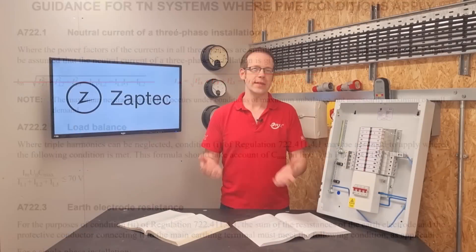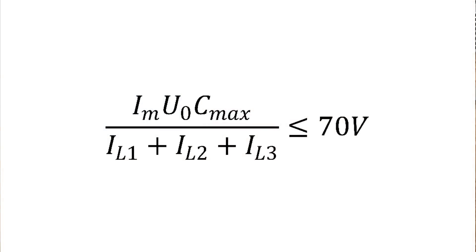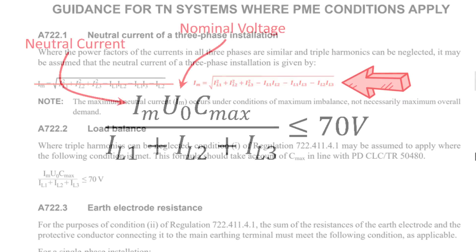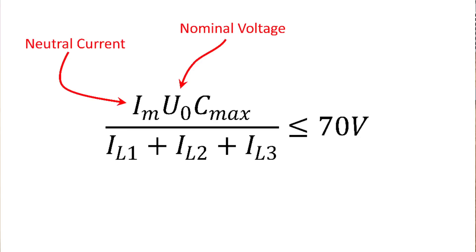IM times UO times Cmax over IL1 plus IL2 plus IL3 is less than or equal to 70 volts. The formula is actually pretty simple—it's just Ohm's law and the power formula all jumbled up together. On the top line, IM is the current in the neutral, which can be found by applying the rather scary formula in A722.1 and is rather dear to my heart as someone who loved teaching electrical science. Then we've got UO, which is the nominal voltage to earth in the system, so 230 volts, and Cmax is just a way of adjusting the voltage to allow for variations to the supply voltage.